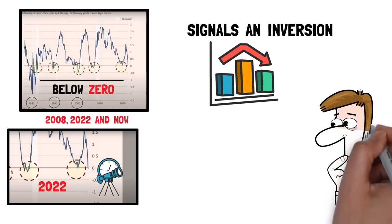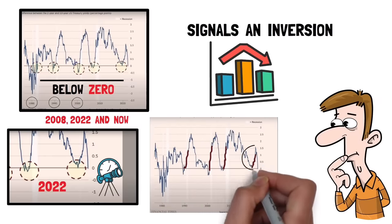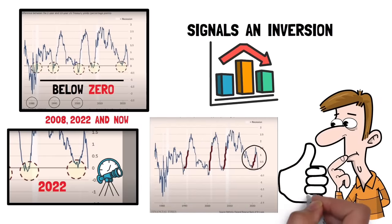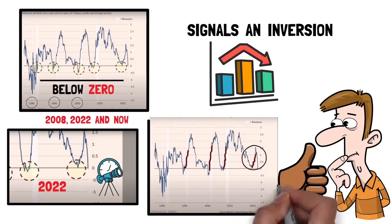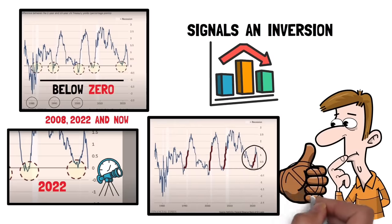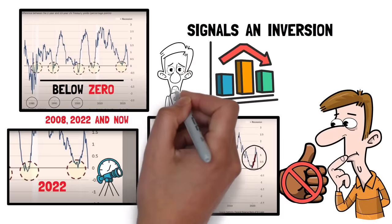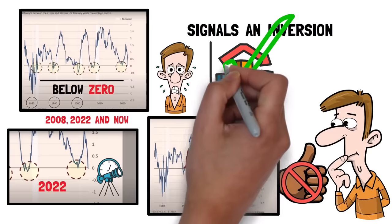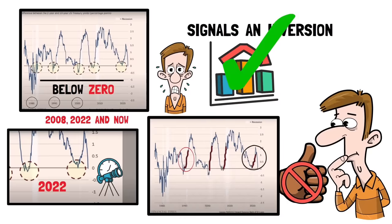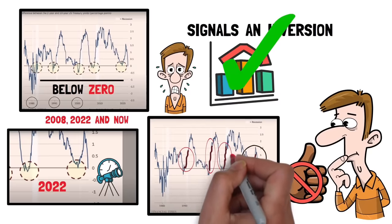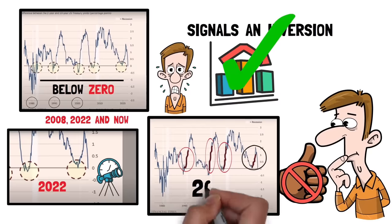Now you might think, well, we're coming back up, which is good news. Maybe we've managed to avoid the storm. But this couldn't be further from the truth. The worst, and really when the recession typically starts, is after the inversion is complete and the line moves past zero into positive territory. Look at 2008. It was years after the inversion that the real pain began.